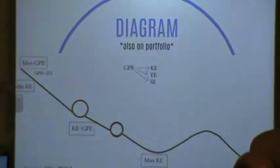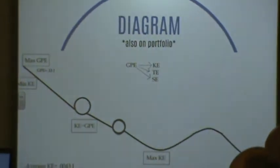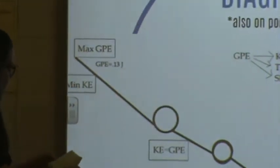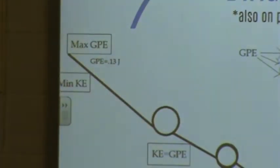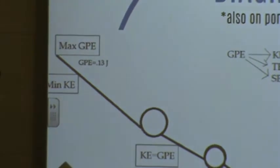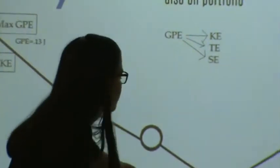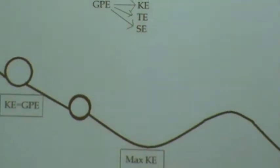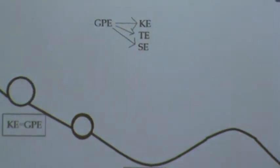As you can see, the maximum GPE, or gravitational potential energy, is located at the highest point of our coaster. This is what makes the coaster have such high speed. The maximum KE, or kinetic energy, is located at the bottom of the slope. This is where the coaster is moving at the fastest point.